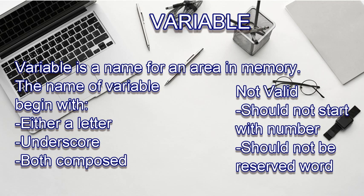A variable should not be any reserved keyword. For example, you cannot declare a variable named 'int int' because 'int' is already a defined data type in C language. There are many reserved keywords in C that we cannot use as variable names in the compiler. We can only use names that are not reserved, and we can create our own variable names.